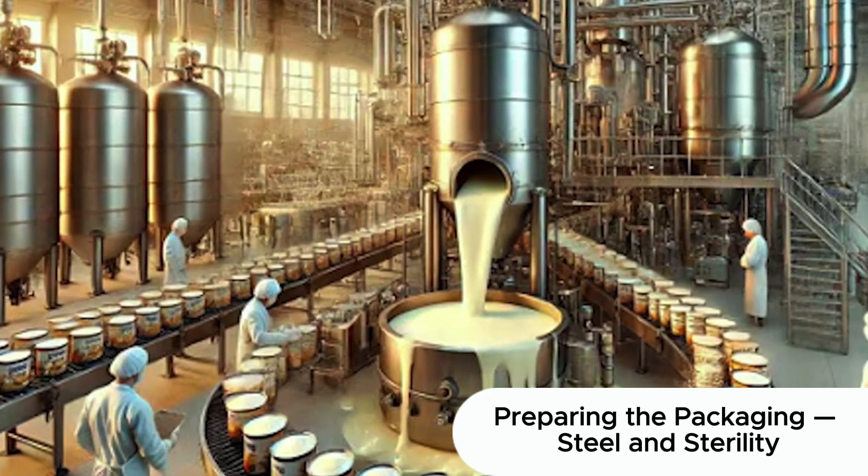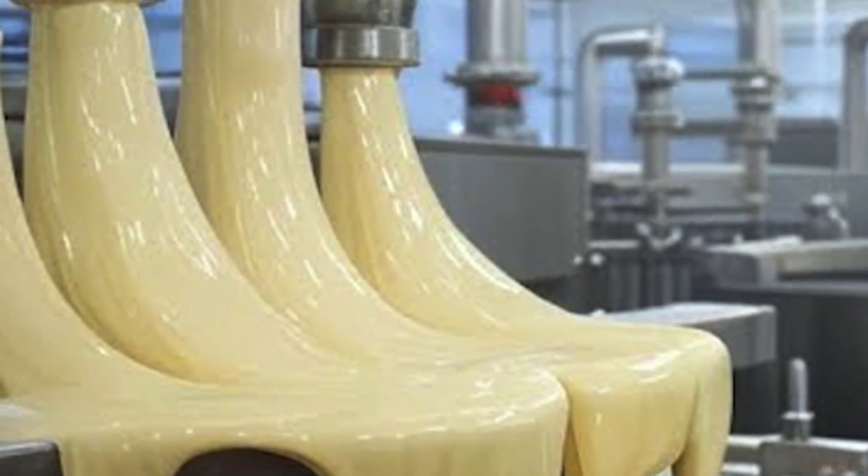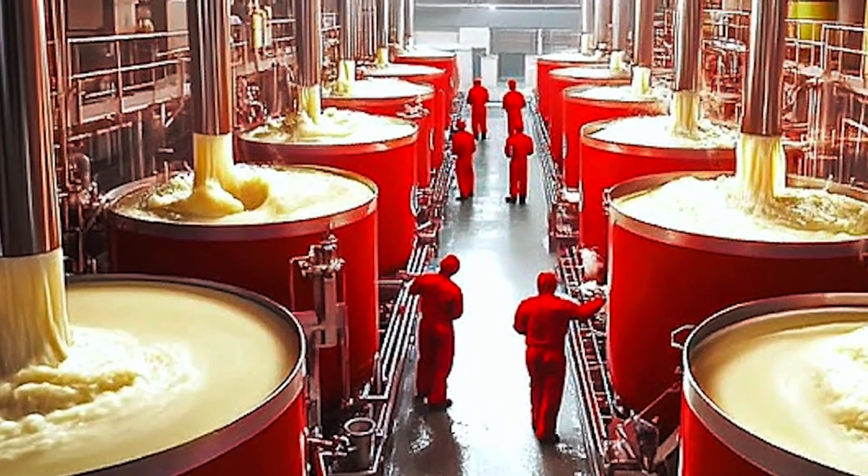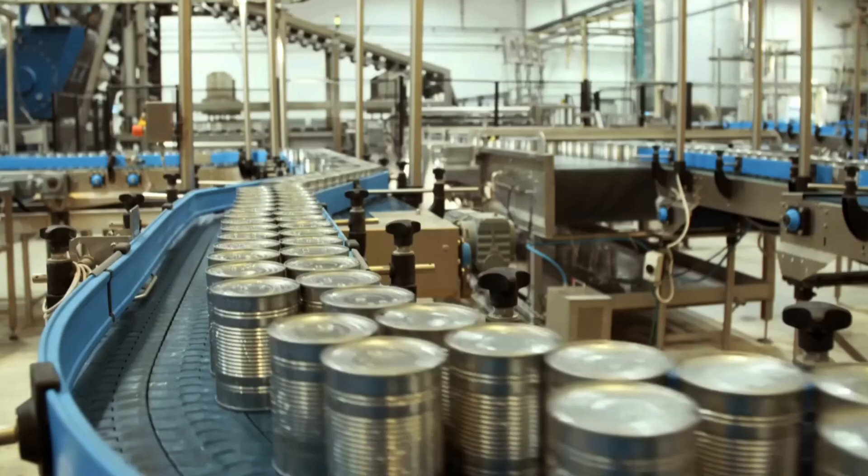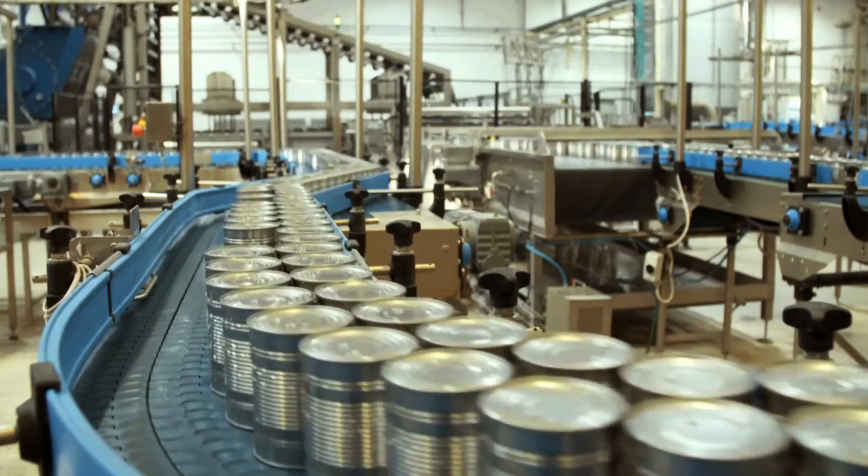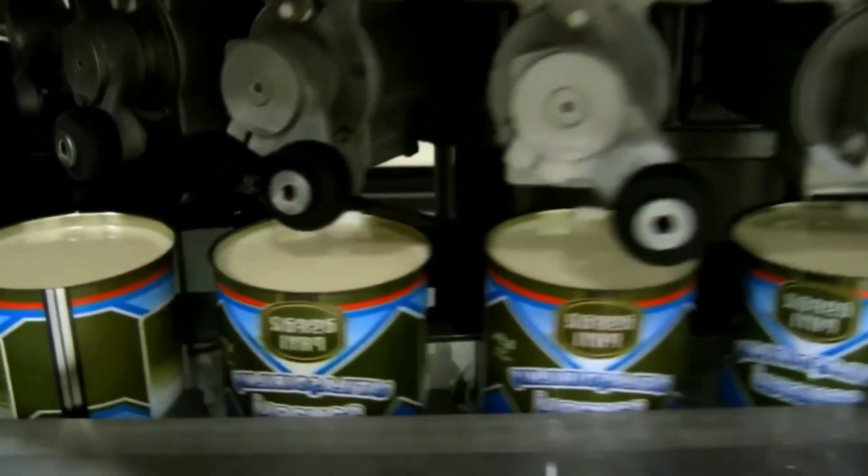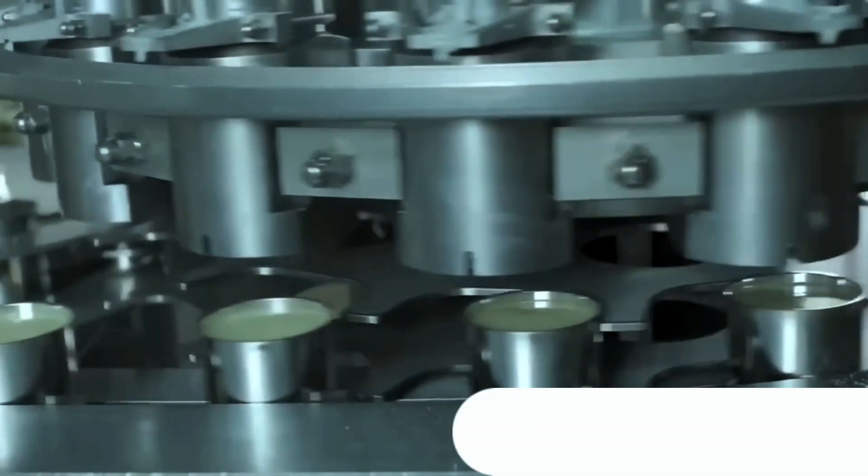While the product is being prepared for filling, the packaging is also getting ready. Most condensed milk is packed into tin cans. They're durable, airtight, and can withstand high-temperature steam sterilization. Cans arrive pre-formed from a supplier, but still require thorough cleaning. Before filling, they are passed through multi-stage washers and then exposed to high-pressure steam at temperatures up to 120 degrees Celsius to ensure absolute sterility. Each can is inspected for seam integrity, cleanliness, and deformation before it ever meets the product.